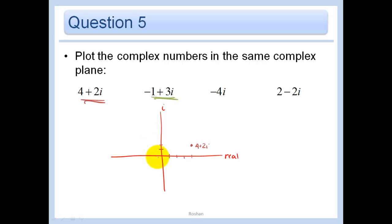Minus 4i is purely imaginary. So it's down 4 units on the imaginary plane. Minus 4i. And then 2 minus 2i is over 2, down 2, 2 minus 2i.